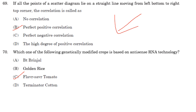Which of the following genetically modified crops is based on antisense RNA technology? It is the Flavr Savr tomato. Answer is option C. Thank you for watching my channel. If you are new to my channel, please do like, share and subscribe.